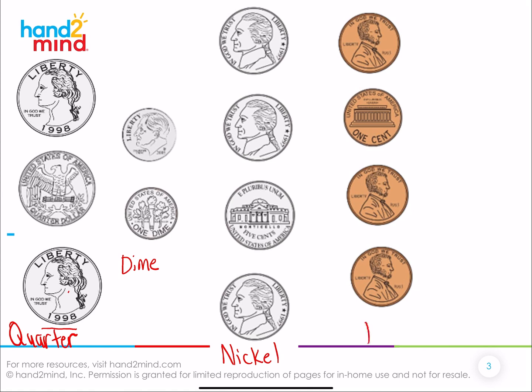And then what is this over here on the right hand side? It's called a penny. Now pennies are interesting. They're kind of easy to spot. Why are they so easy to spot? Because they're not silver. They are made out of what we call copper. And who's on the front of the penny? It's Abraham Lincoln. And on the back of the penny is the Lincoln Memorial.